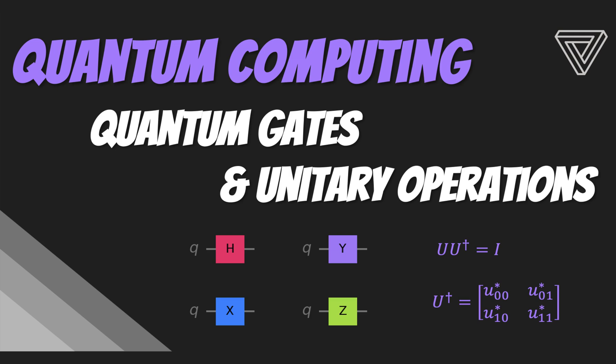In the past we've discussed the general idea of a quantum circuit, but this was done for a limited subset of possible operations. Let's now take a look at the general definition of a single qubit quantum gate, which is represented by what is known as a unitary matrix.